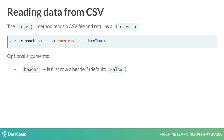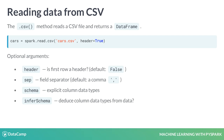The header argument specifies whether or not there is a header record. The sep argument gives the field separator, which is a comma by default. There are two arguments which pertain to column data types: schema and inferSchema. Finally, the nullValue argument gives the placeholder used to indicate missing data.